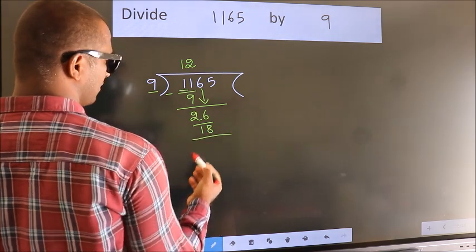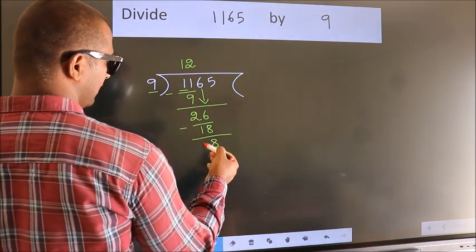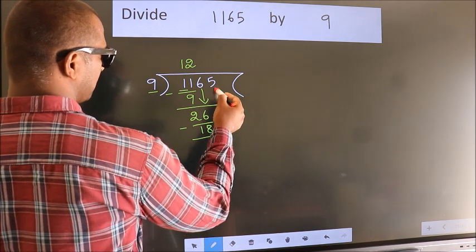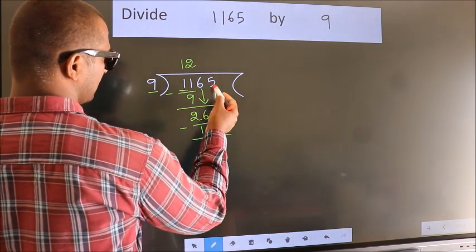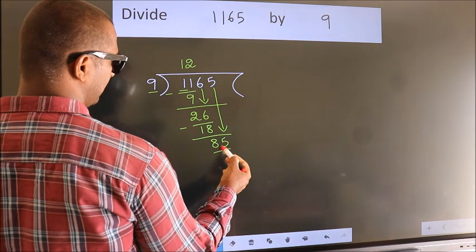Now we subtract and get 8. After this, bring down the beside number. 5 down, so 85.